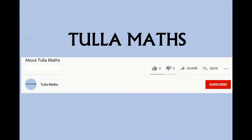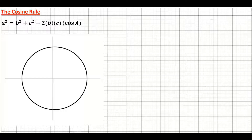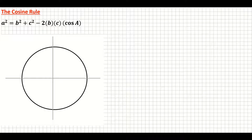Welcome to another tutorial video from Tullamaths. Make sure and subscribe for more. This video explains the proof of the cosine rule. The cosine rule in your log tables is stated as a squared equals b squared plus c squared minus 2bc cos A.